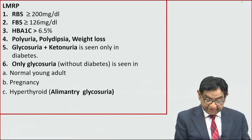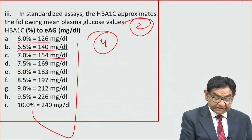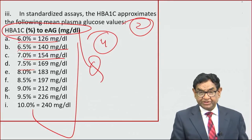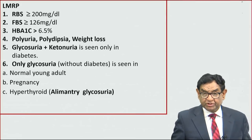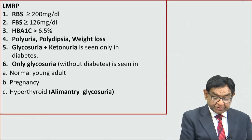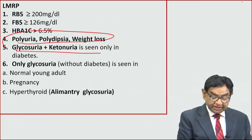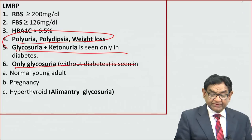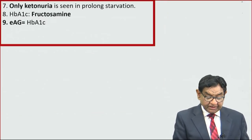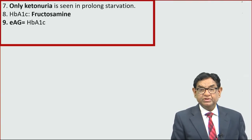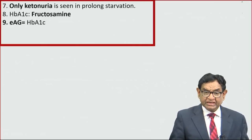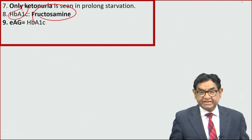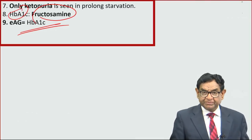Quick recap: Estimated average glucose is based on HbA1c. Diagnosis of diabetes: fasting sugar more than 126, random sugar more than 200 mg%, HbA1c more than 6.5%. Polyuria, polydipsia, and weight loss are the classical triad of diabetes. Glycosuria plus ketonuria is seen only in diabetes/DKA. Glycosuria alone without diabetes is seen in pregnancy, young adults (renal glycosuria), and hyperthyroidism. Ketonuria alone is seen in prolonged starvation. HbA1c monitors last three months; fructosamine monitors last two to three weeks and is used in pregnancy, preconception, hemolytic anemia, and hemoglobinopathies. Estimated average glucose is based on HbA1c.